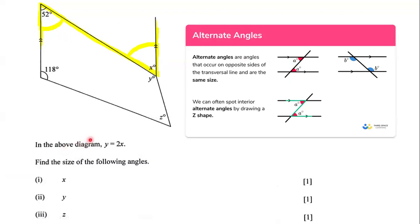What do we know about alternate angles? Alternate angles are the same size. So if this angle is 52 degrees, that means that x is also 52 degrees. So the size of angle x is 52 degrees.